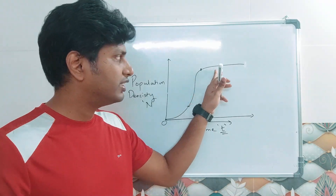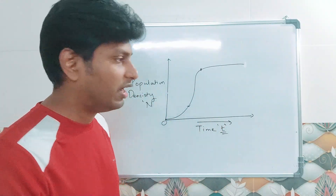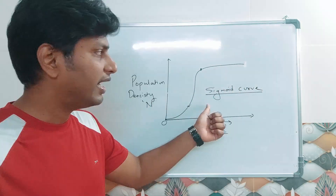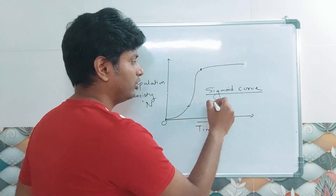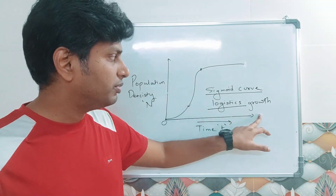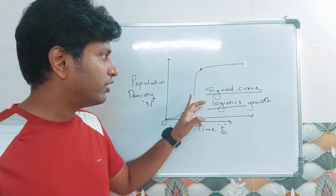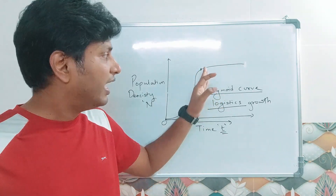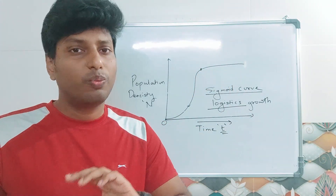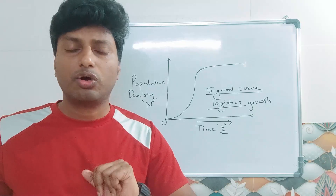After that point, the population density stops growing and becomes stable. Such a graph is called a sigmoid graph or sigmoid curve, and this represents logistic growth. Logistic growth means the population initially rises, keeps increasing, and then beyond a certain point becomes stable.